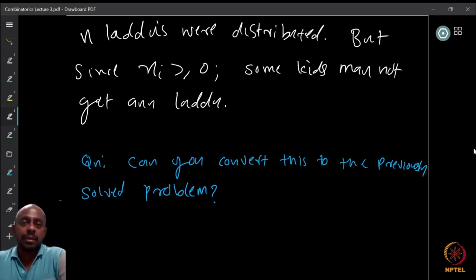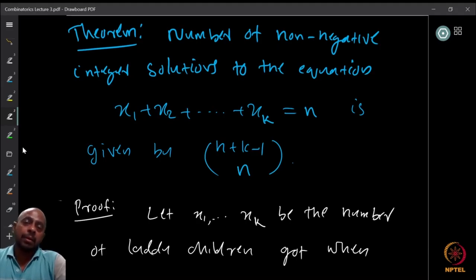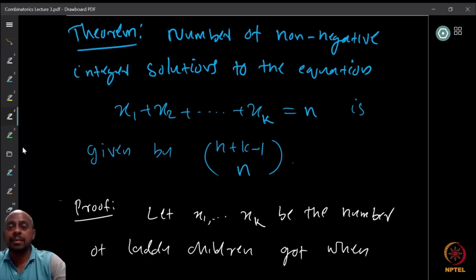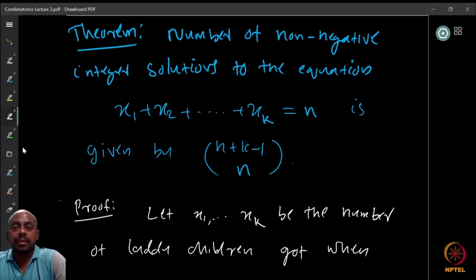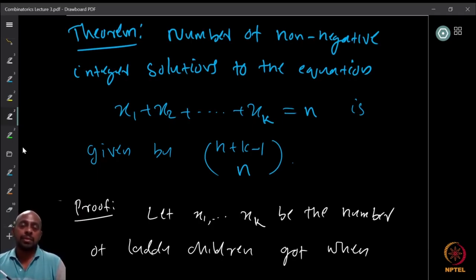We want to distribute n sweets to k children where some kids may get nothing, and we want to convert it to the question where everybody gets at least one. How do you ensure everybody gets at least one when some of them can clearly be zero? Here is the trick: before the distribution, go to each child and borrow one laddu from them.